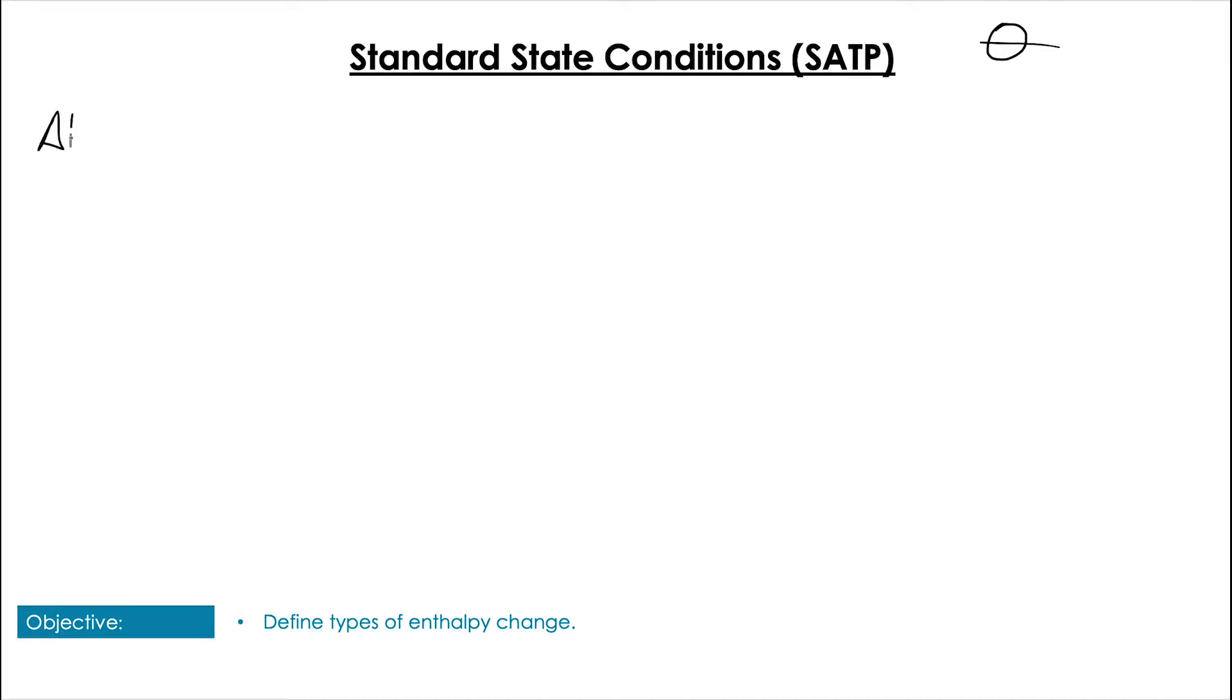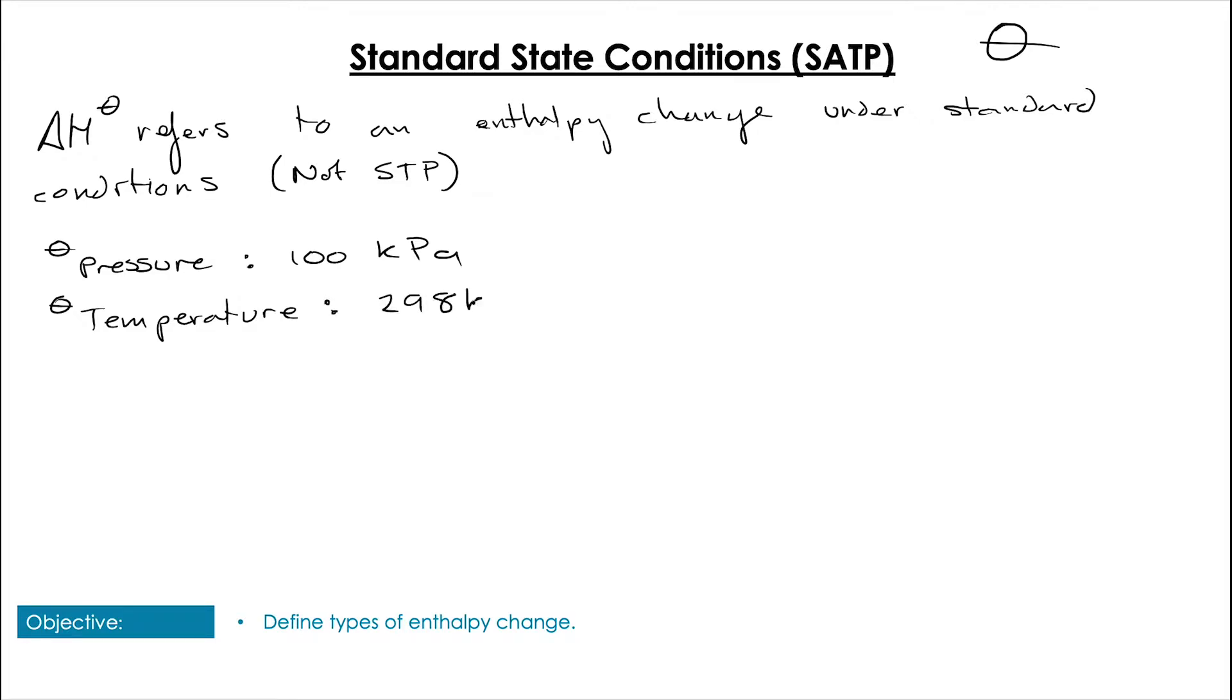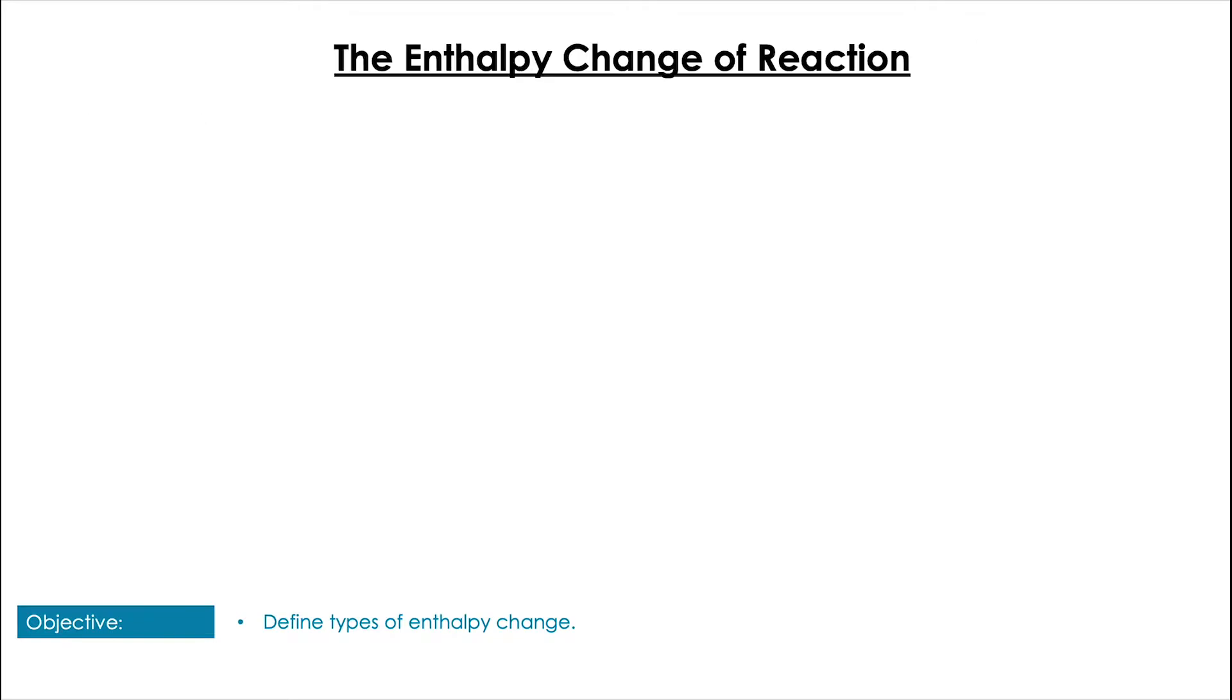Before we get started on the enthalpy definitions, let's look at standard state conditions, SATP, as represented by this little circle with a line through it. Any enthalpy change that happens in these conditions happens at SATP: pressure 100 kilopascals, temperature 298K, concentration 1 mol per decimeter cubed, and the state would be the physical state of the substance at those conditions.